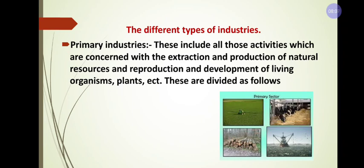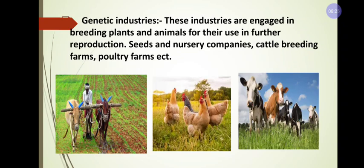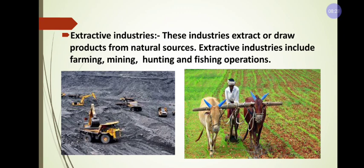Within primary industry there are two types: extractive industry and genetic industry. Extractive industry refers to industries that extract — meaning digging or obtaining — raw material from nature. The best examples are farming, mining, hunting, fishing, etc. These are the best examples for extractive industry.